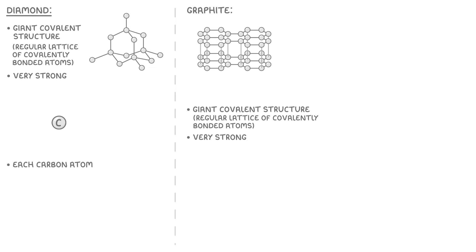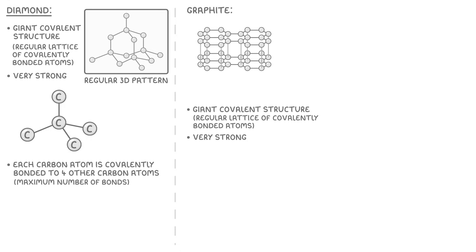In diamond, each of the carbon atoms is covalently bonded to four other carbon atoms, which is the maximum number of bonds that carbon can make. This forms a regular 3D pattern, which you're fortunately not going to have to draw, but you do need to be able to recognize this sort of structure.